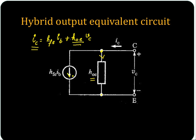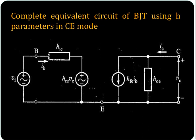So HFE times IB. Combining the hybrid input equivalent circuit and output equivalent circuit, you can develop the complete equivalent circuit of BJT using H parameters in common emitter mode.